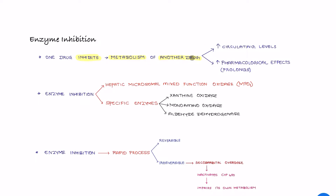So what happens to the metabolism of another drug? Once the enzyme required for metabolism of this drug is inhibited, the drug concentration will increase. There will be an increase in the circulating levels of this drug as well as prolonged pharmacological effects. So enzyme inhibition reduces or prevents the metabolic activity of one drug, leading to increased circulating levels and prolonged pharmacological effects.